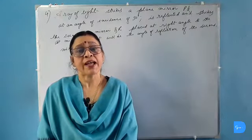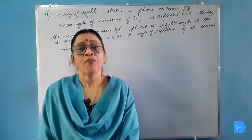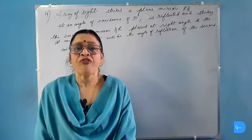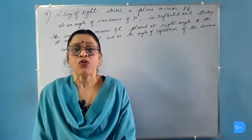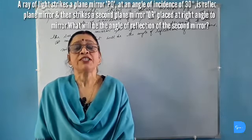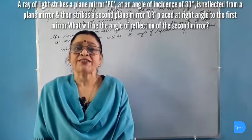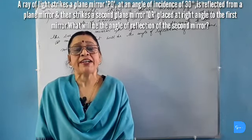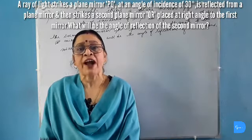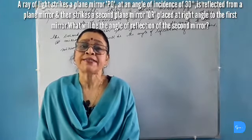We will discuss another numerical problem on reflection of light from plane mirror. A ray of light strikes a plane mirror PQ making an angle of incidence of 30 degrees. It reflects and strikes the second plane mirror which is placed at right angle to the first mirror. Find the angle of reflection in the second mirror.